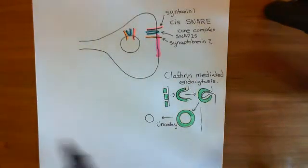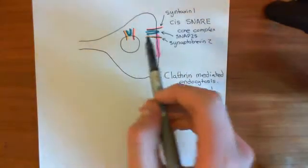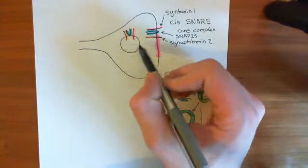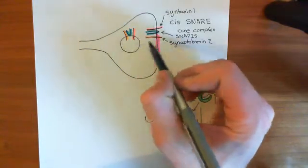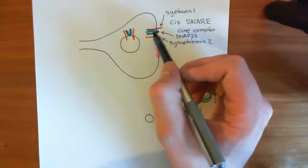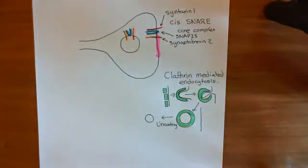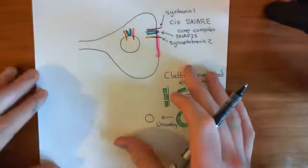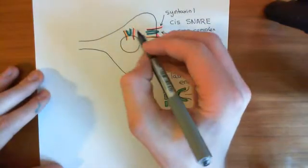Now what we want to look at is the process by which cis-SNARE complexes can be disassembled. This doesn't just happen in re-endocytosed vesicles — it will happen in the membrane as well. So how do we take apart these cis-SNARE complexes? Basically, what happens is a protein known as SNAP binds to the SNARE proteins.